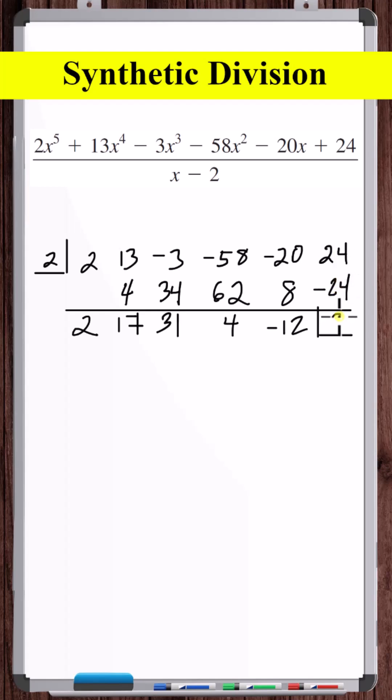Minus twelve times two is minus twenty-four. Twenty-four minus twenty-four is zero. In the box here, this is the remainder. So after dividing these two polynomials, we're left with just the quotient.